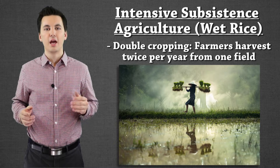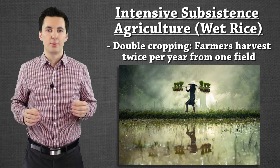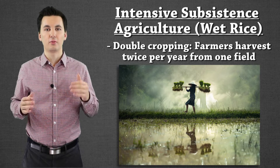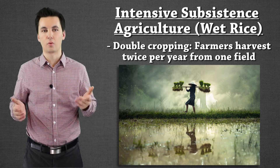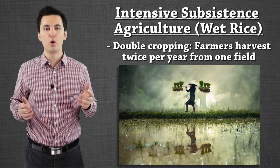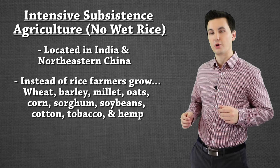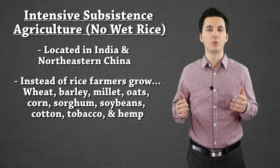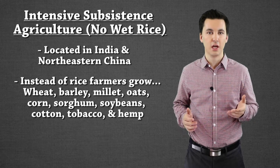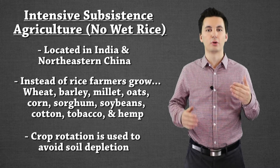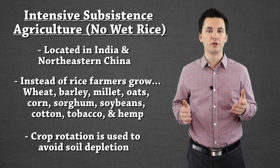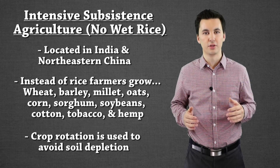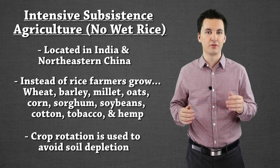The other type of intensive agriculture is non-wet rice, which is located in areas where the environment just doesn't support the production of rice. This is normally because winters are too harsh. Instead of growing rice, you can see the different products that are grown on screen. The reason why these are grown is because the winters get too cold, so we wouldn't be able to have a successful yield with rice. One of the important things for this type of agriculture is rotating your crops. This is to prevent soil depletion. If the soil gets depleted, there aren't enough nutrients and the farmer will get worse and worse yield — which is not acceptable for intensive subsistence agriculture.